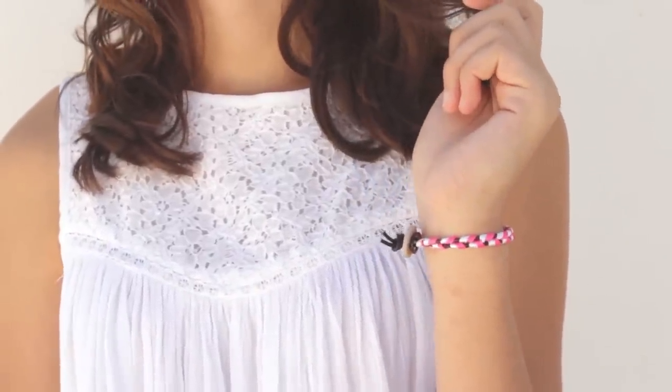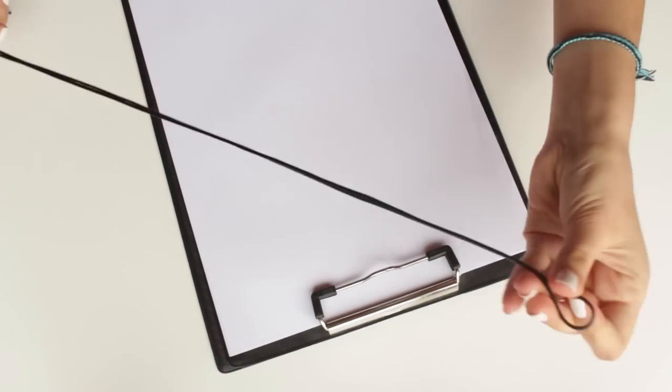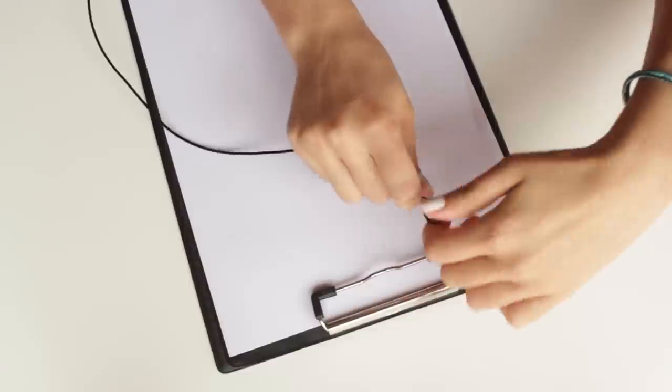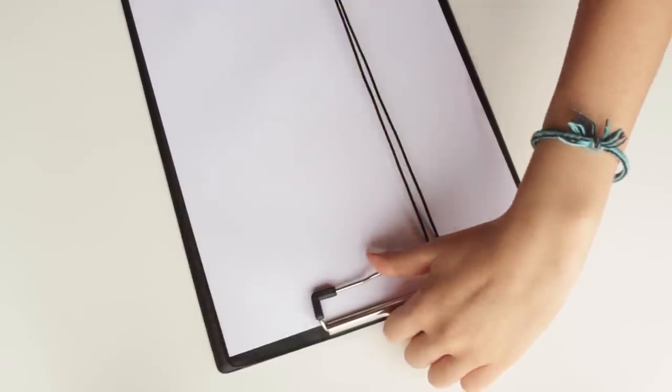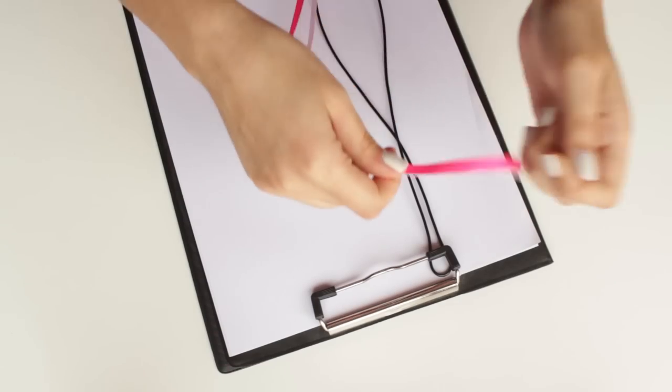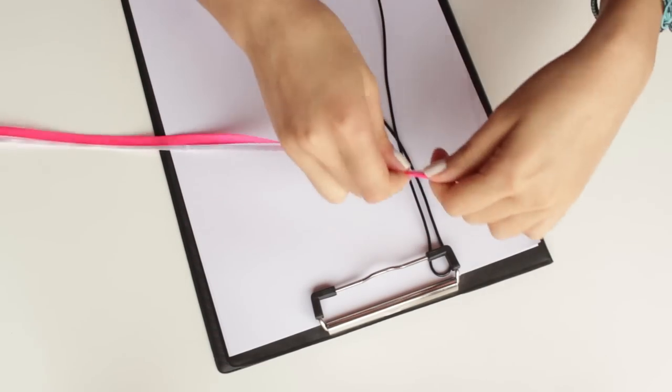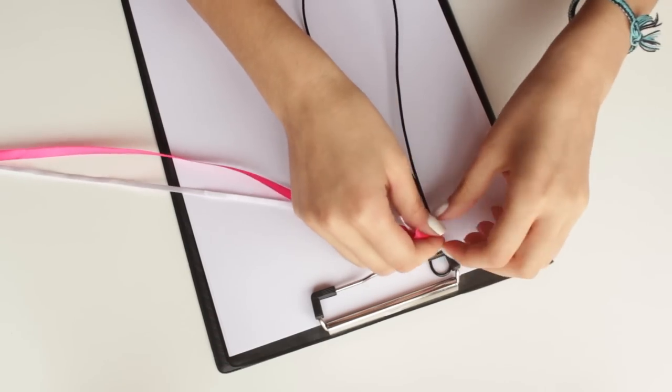The first bracelet is one of my favorites, it has ribbon and a button for the closure part and to make it you will need to fold 1m of leather cord in half and use a clipboard or tape to hold it in place. Grab 2 thin ribbons with 70cm each and tie it at the top.